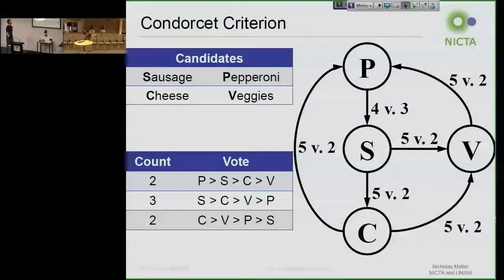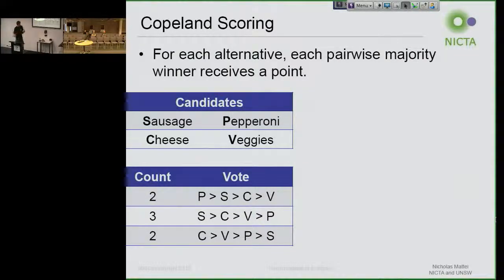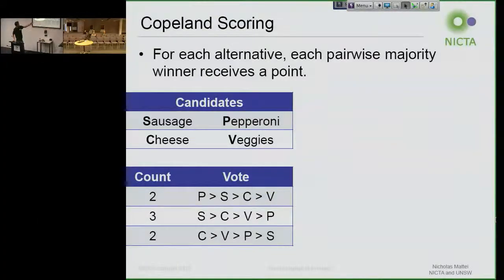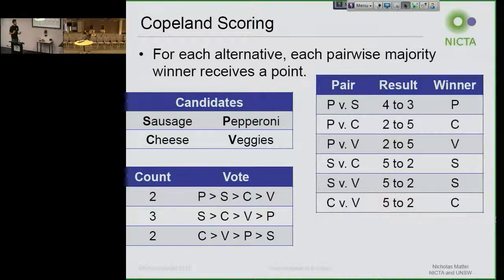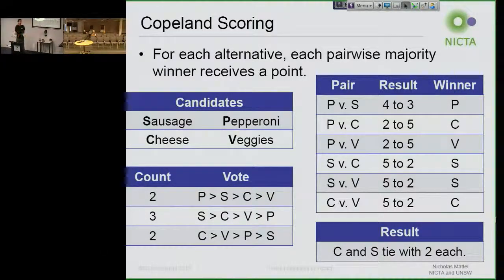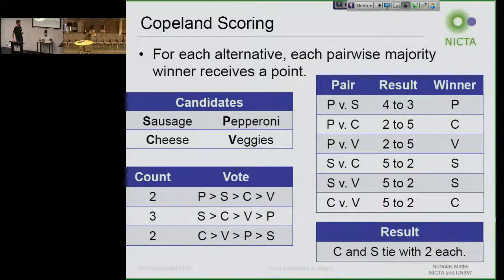Independent of the Condorcet criterion, you can encode different ways to score or do tie-breaking. One thing that's really common is Copeland scoring — what happens in soccer tournaments — where you look at each pairwise matchup and award a point for a win, some points for a tie, and negative points for a loss. Taking the same preferences over the same pizza toppings, you can break things down and set points for each pairwise matchup. If we do that, we end up with a tie — a voting correspondence — so we'd have to apply some tie-breaking rule to select cheese or sausage.